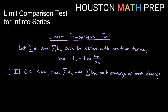A similar thing here, except we don't just compare greater than or less than with the limit comparison test. We look at the limit of the terms of the series we are trying to figure out divided by the terms of the series we know its behavior, and we look at the limit of that. We call it L. The idea is if you get some positive real number — something between zero and infinity — then they both do the same thing: they both converge or they both diverge.